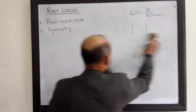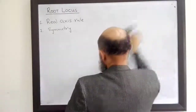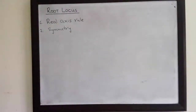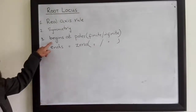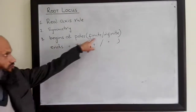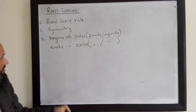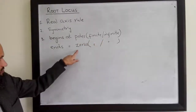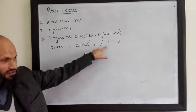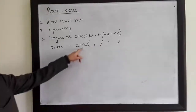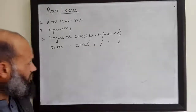The third rule is that root locus starts at poles and ends at zeros. Root locus always begins at poles — these poles can be either finite poles or they can lie at infinity — and ends at zeros. Zeros can also be finite or at infinity.